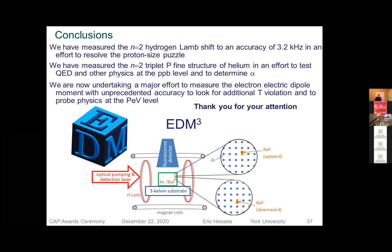And that's all I'm going to say about it. And in conclusion, we've measured the N equal to lamb shift, helping to resolve the proton size problem. We've measured the N equal to triple P fine structure as a test at the part per billion level for QED and to help determine the fine structure constant. And now we're doing this new PDMQ test to try to measure the electron-electric dipole moment. And with that, I'd like to thank you for your attention.